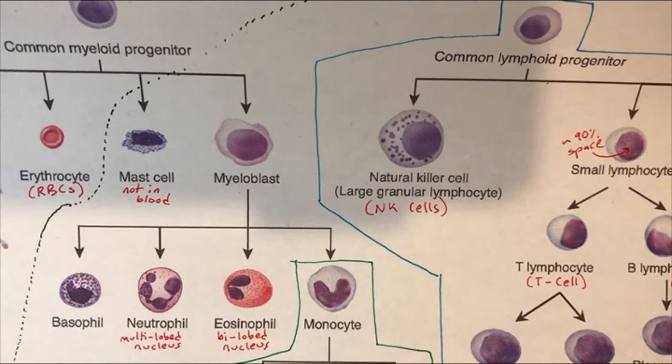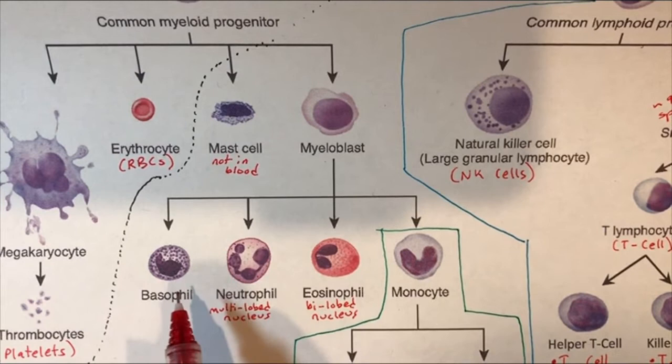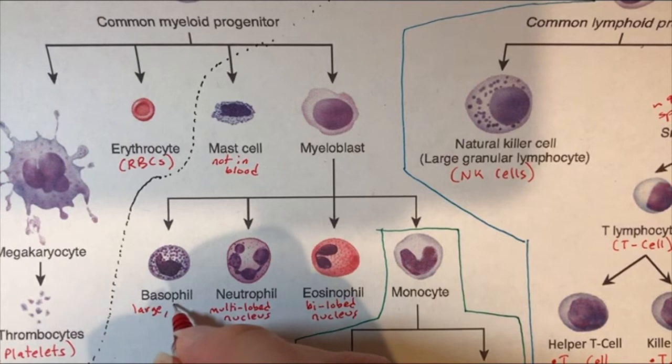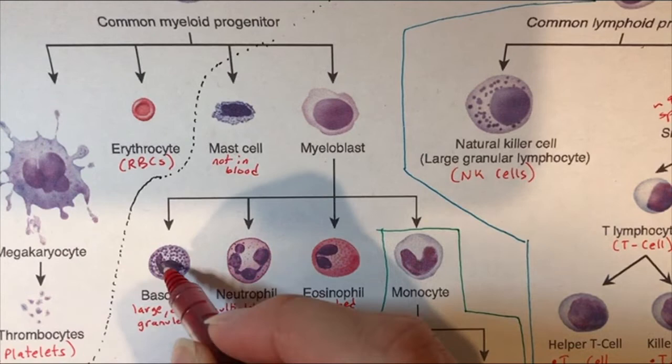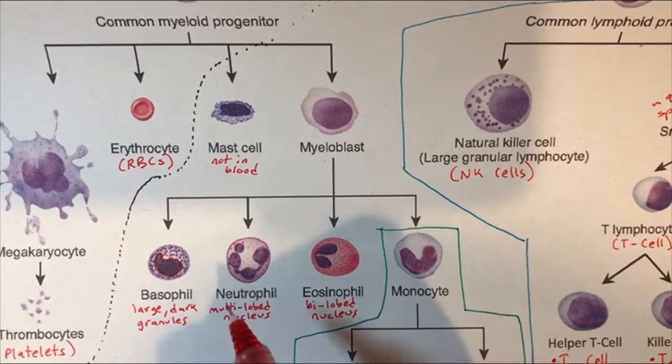And then the last major cell type is the basophils. The basophils are right there, and they're distinguished by very large, dark granules. Even if you look at the shape of the nucleus, the nucleus has a little bump on it. That little bump can help you distinguish a basophil from these other cells.